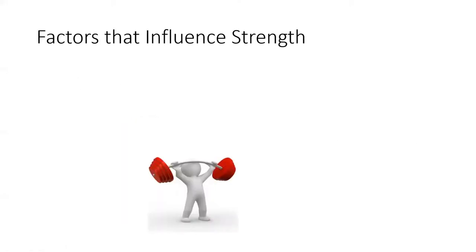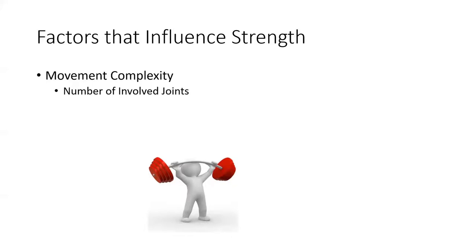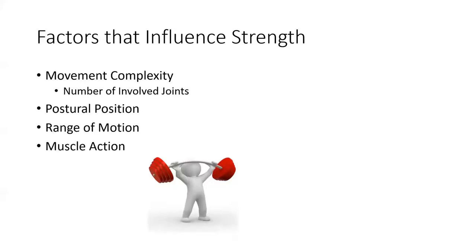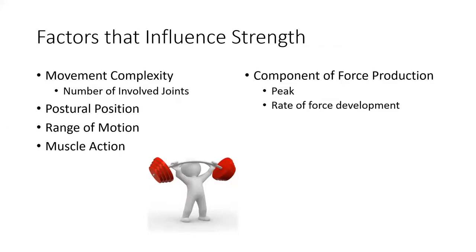Next we move into strength. Strength is more complex than it seems — we need to understand what factors influence it. The first is movement complexity, or the number of joints involved. Strength is determined by the joints you move, the leverages at those joints, and the amount of muscle available. Thinking back to biomechanics: we have to understand leverages, range of motion, postural position, and the muscle action involved.